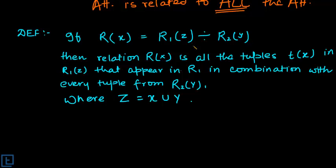All the tuples Tx in R1 Z that appear in R1 in combination with all the tuples of R2, that is the result, that is Rx. Let's understand it with a proper example here.